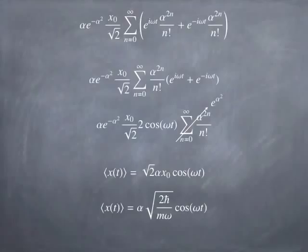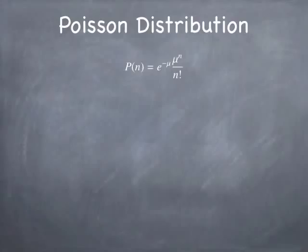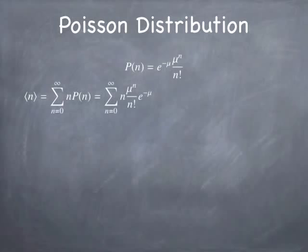Maybe that gives you some idea of how you can do calculations with these states — it should help with the questions at the end of the project 4 report. Let's talk about the Poisson distribution. It turns out that the probability of having a quantum number n in the coherent state is nothing other than the Poisson distribution — a standard distribution well-known before quantum mechanics was invented.